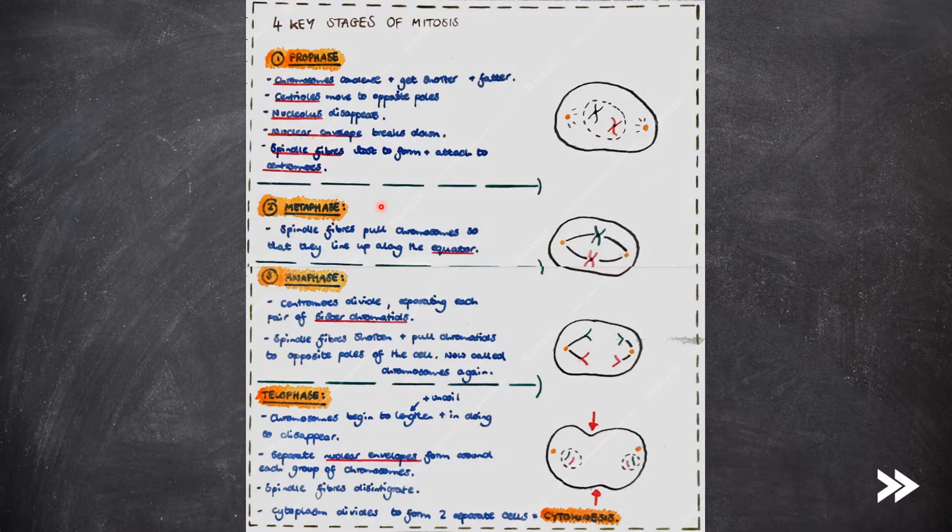Then we have metaphase. In metaphase, the spindle fibres pull the chromosomes so that they line up along the equator, also known as the metaphase plate.